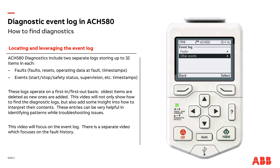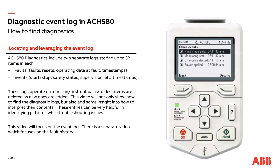Now let's go to Hand. We have a setpoint here, so now we're actually running. We've transitioned from Off to Hand. Let's see what events are added in the log. We see that modulating started as we pushed the Hand button, and the state transition shows up just slightly after the modulation actually started.